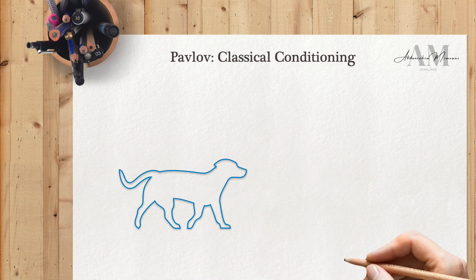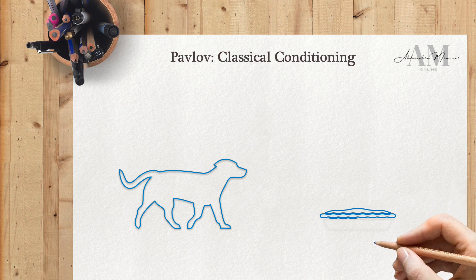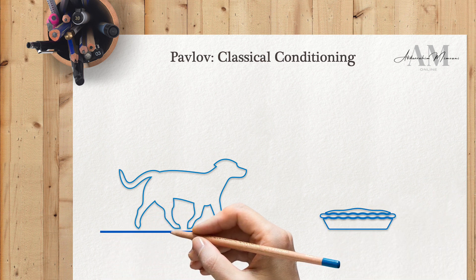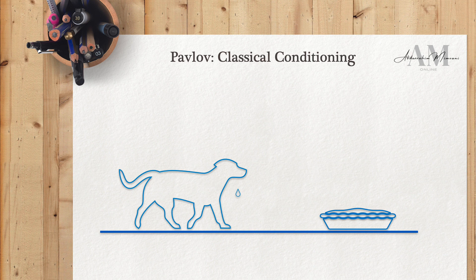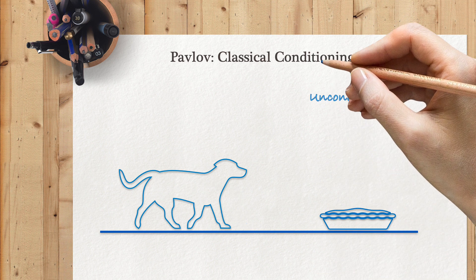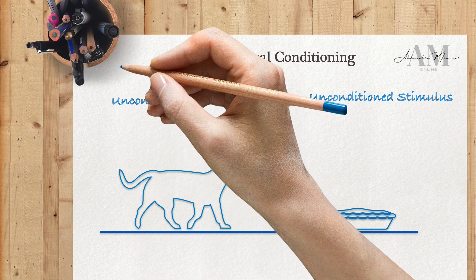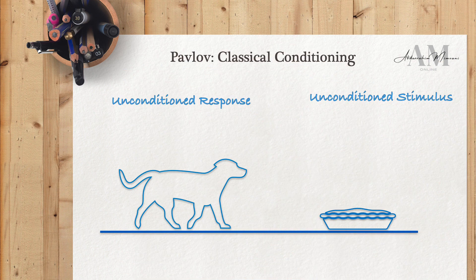Pavlov noticed that when a hungry dog encountered meat, it would start salivating. Because this reaction happened naturally, without any prior training, the meat was labeled as an unconditioned stimulus. Likewise, the act of salivating itself, which occurred without any deliberate training or experience, was termed an unconditioned response.